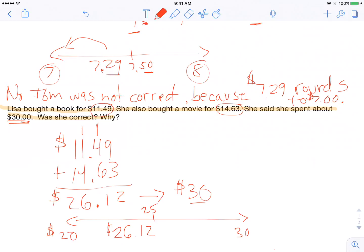So since she has $26.12, that's past 25. $26.12 rounds to 30. So she was correct.